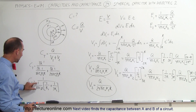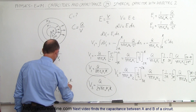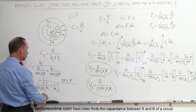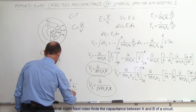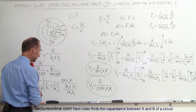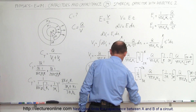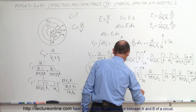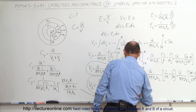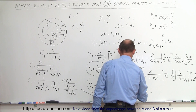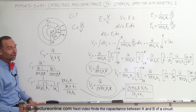Dividing by a fraction means multiplying, so this becomes 8πε₀r divided by (3k2 + k1)/(3k1k2). Moving 3k1k2 to the numerator gives the final answer: C = 24πε₀r·k1k2 divided by (3k2 + k1). That is the capacitance of a spherical capacitor with two layers of dielectric, K1 and K2.